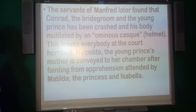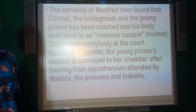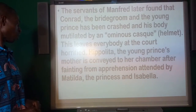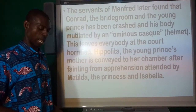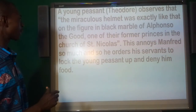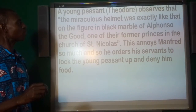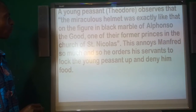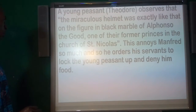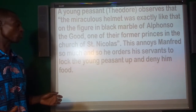This leaves everybody at the court horrified. Hippolyta, the young prince's mother, is conveyed to her chamber after fainting from apprehension, attended by Matilda, the princess, and Isabella. A young peasant named Theodore observes that the miraculous helmet was exactly like that on the figure in the Black Marble of Alfonso the Good, one of their former princes, in the Church of St. Nicholas. This annoys Manfred so much that he orders his servants to lock the young peasant up and deny him food.